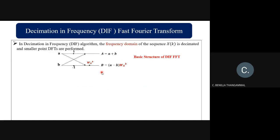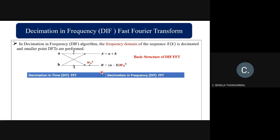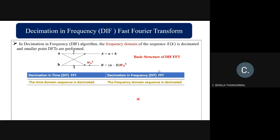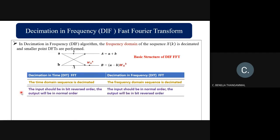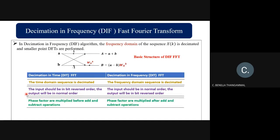We already saw the Decimation in Time algorithm. The major difference between DIT and DIF is: in DIT the time domain sequence of the input signal is decimated, whereas in DIF the frequency domain of the input sequence is decimated. The second major difference is that in DIT the input should be in bit-reverse order and the output in normal order, but in DIF the input is in normal order and the output is in bit-reverse order.